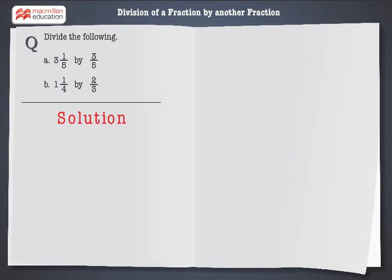Let's solve the first problem: 3 and 1 by 5 divided by 3 by 5. 3 and 1 by 5 can also be written as 16 by 5.